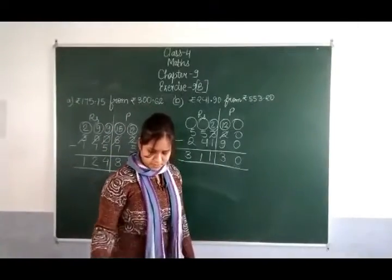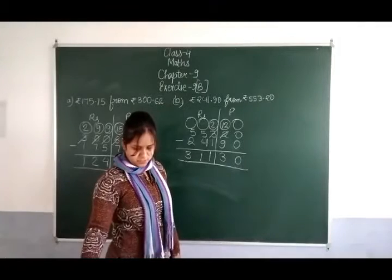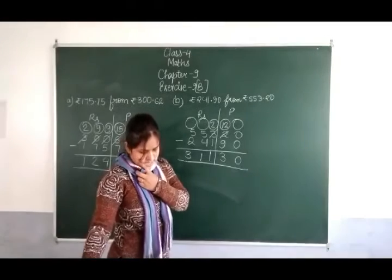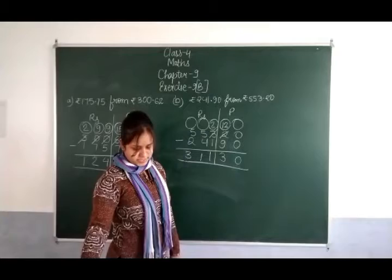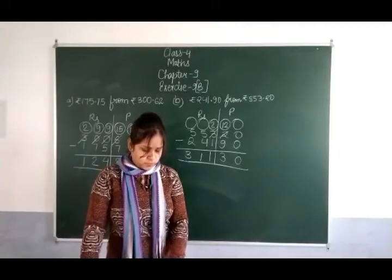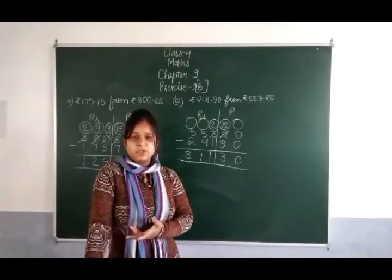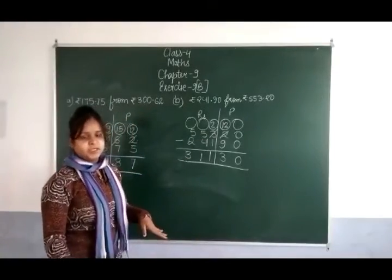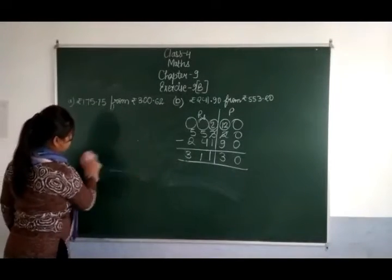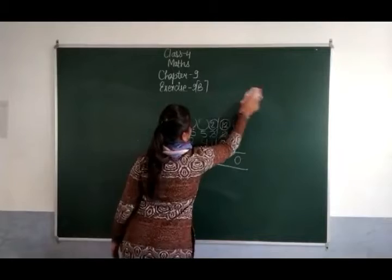अब Subtraction और Addition पे based कुछ word problems हैं। देखिए — Ram Babu ने cloth worth rupees 856.92, एक calculator worth rupees 268.56, और dry fruits worth rupees 306.75 purchase किये। How much money did he spend in all? Total पूछ रहे हैं तो हम plus करेंगे — rupees और paise के column में arrange करके add करेंगे।